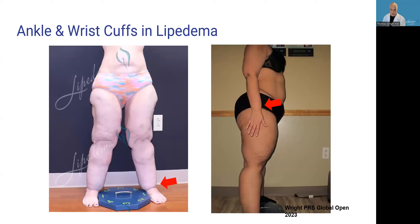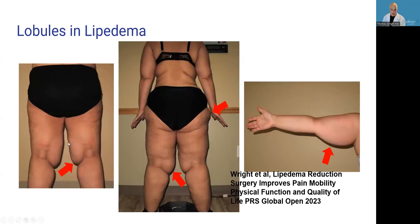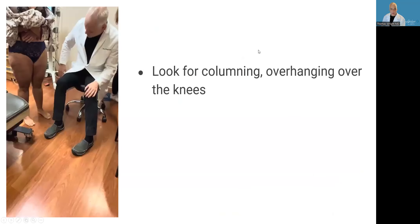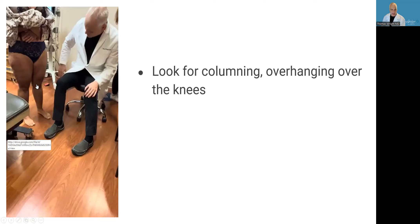We examine for ankle cuffs and wrist cuffs. We look for lobules — inner knee lobules, lateral thigh lobules, and upper arm lobules — which are commonly seen in lipedema, especially in the later stages, particularly stage three. We also look for columning or overhanging legs, where the tissue hangs over like a column over the knee, and there can even be stove-piping in the lower leg. That's a classic sign we see in lipedema.